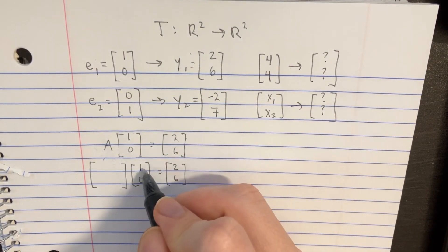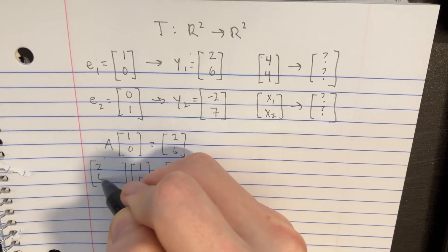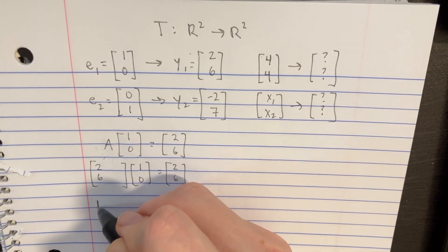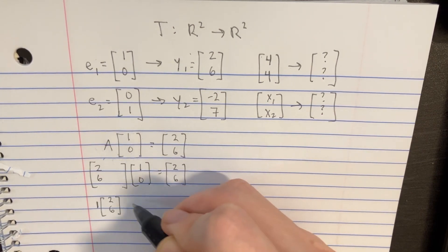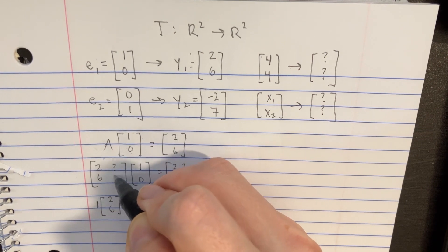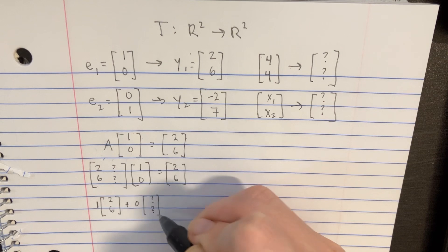And the only way you can do this is if we have a 2, 6 right here, because if that happens, then we can say 1 times the 2, 6, and then plus 0. It doesn't really matter what we put in over here. Because if we go 0 plus whatever's there, it doesn't matter,